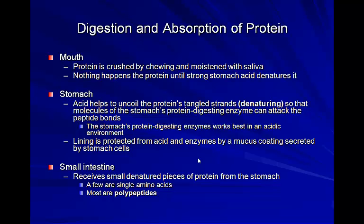Acids are great at uncoiling and unraveling those long amino acid strands that make up the protein — think of it like a hairball that needs to be combed through and unwound. Enzymes can't get in to break apart amino acid strings if they're all tangled up. The acid environment of the stomach helps denature or unwind the protein. Heat also denatures protein — we see this when we cook an egg. Whether you eat the egg raw or cooked, you consume the same protein content, but heat physically changes the structure of those proteins.